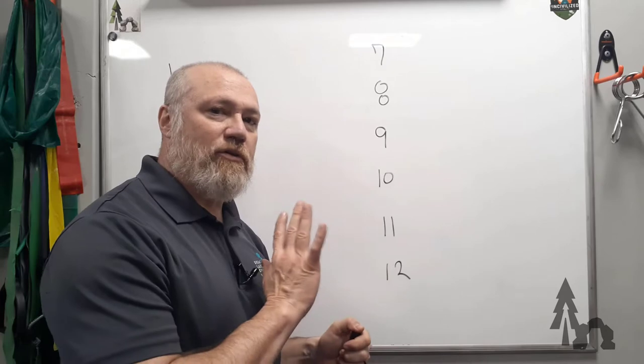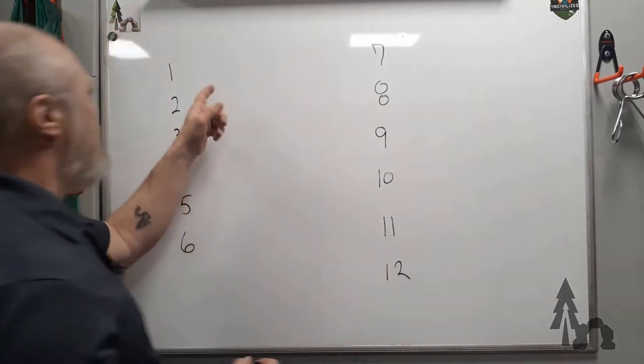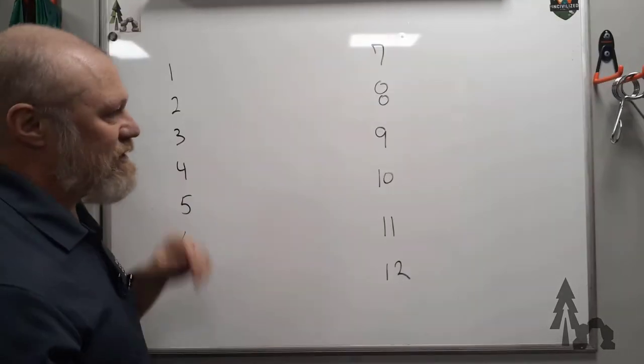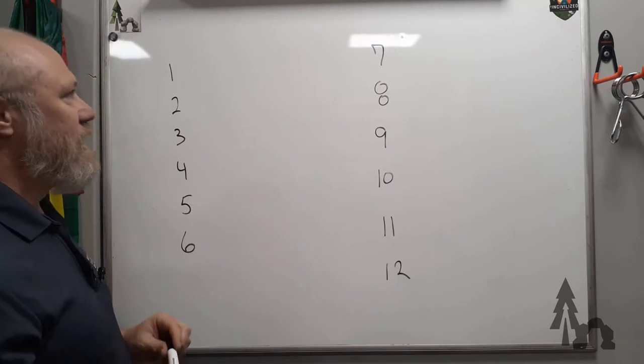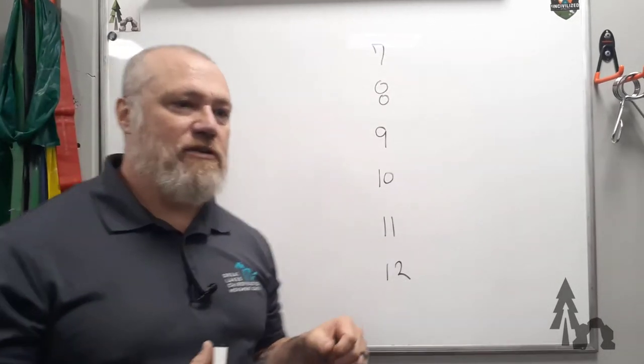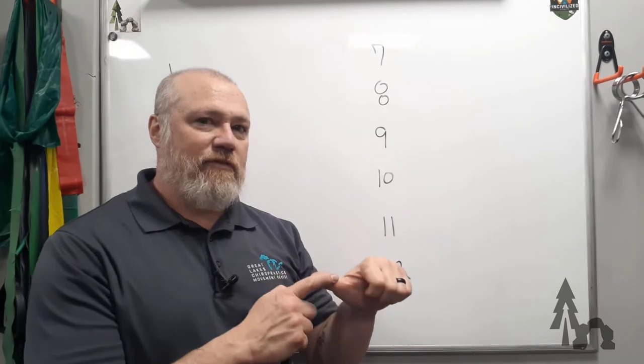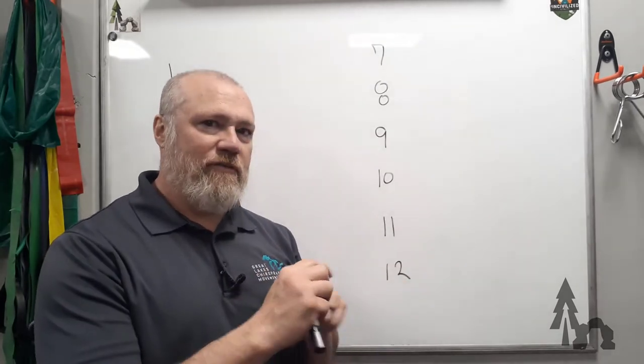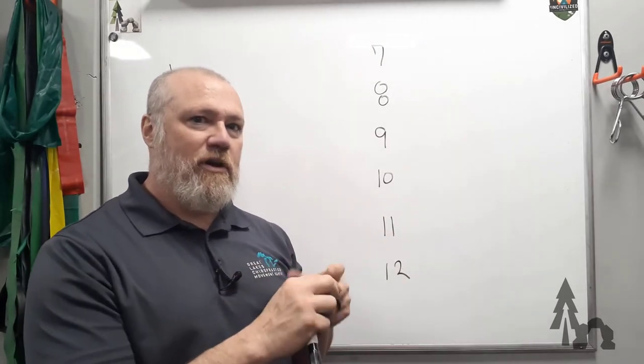So there are 12 cranial nerves or 12 sets of cranial nerves, a right and a left. There's a few things you need to know about them: whether they carry sensory information into the nervous system, motor information out from the central nervous system, or if they're a mixture carrying both sensory and motor.